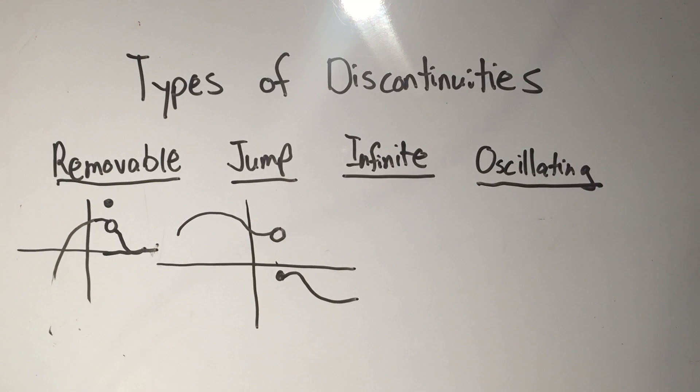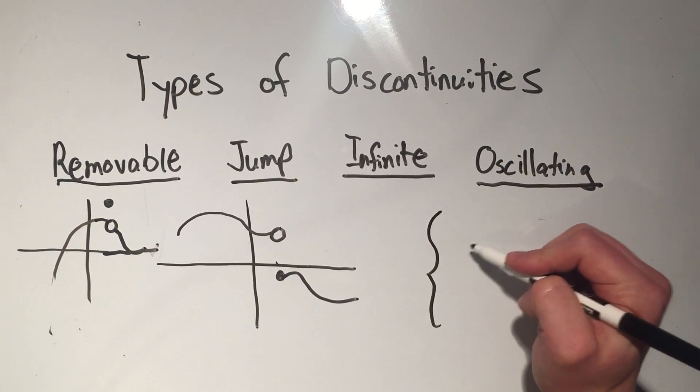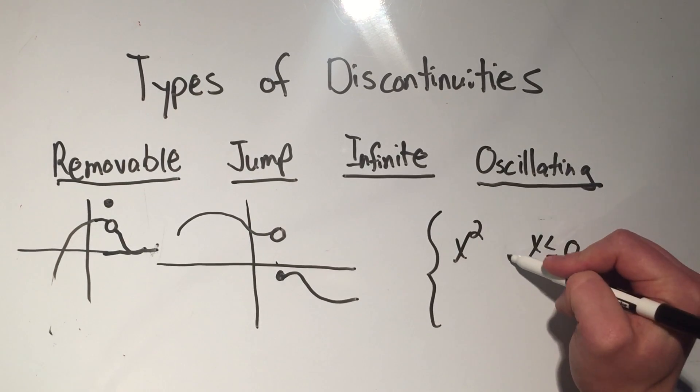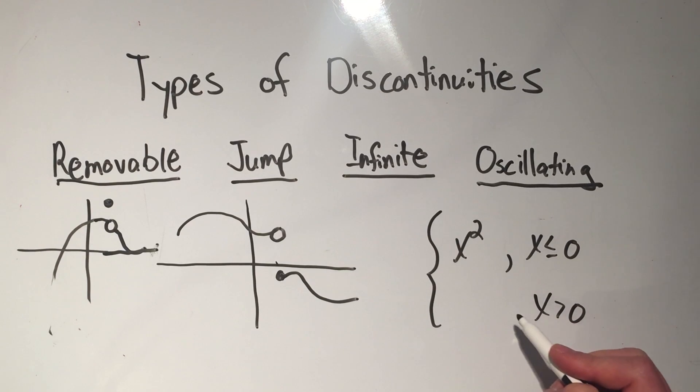These things usually happen from piecewise functions. So if I had, say, x squared if x is less than 0, and then if x was greater than 0, I had, let's just say I had the function 1.